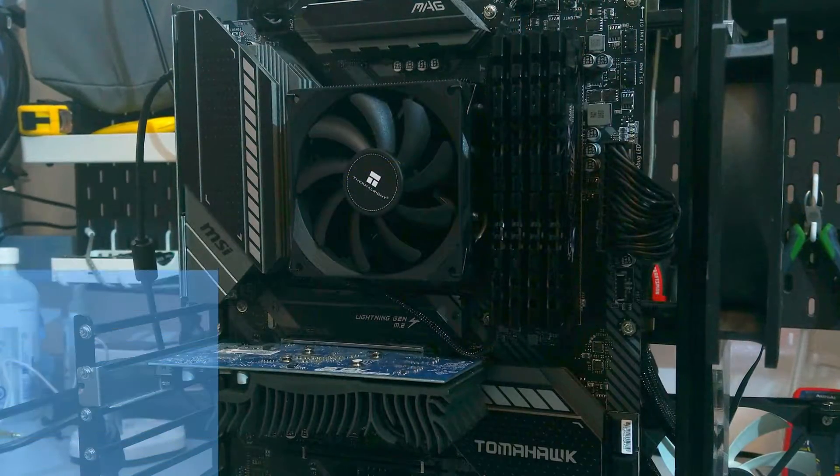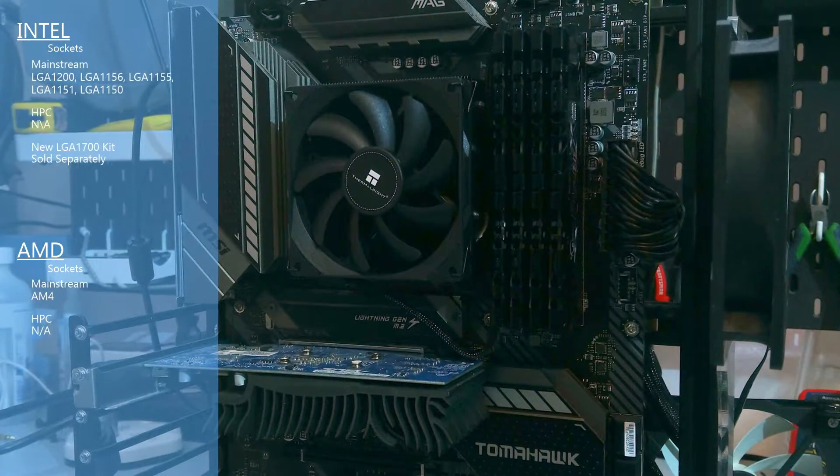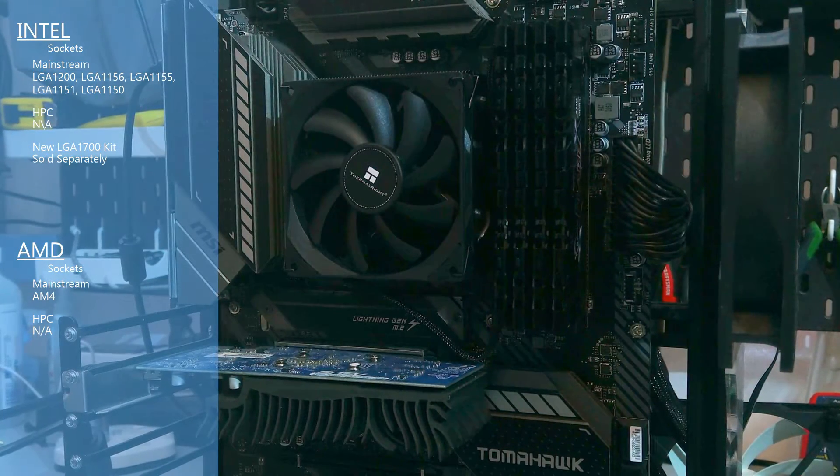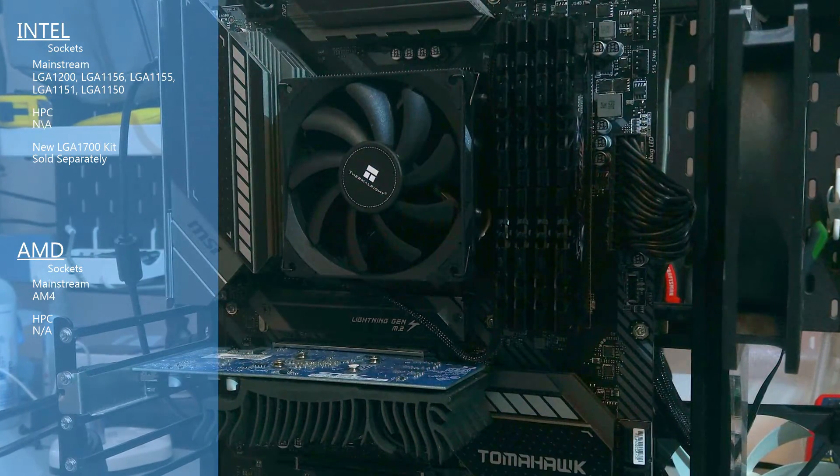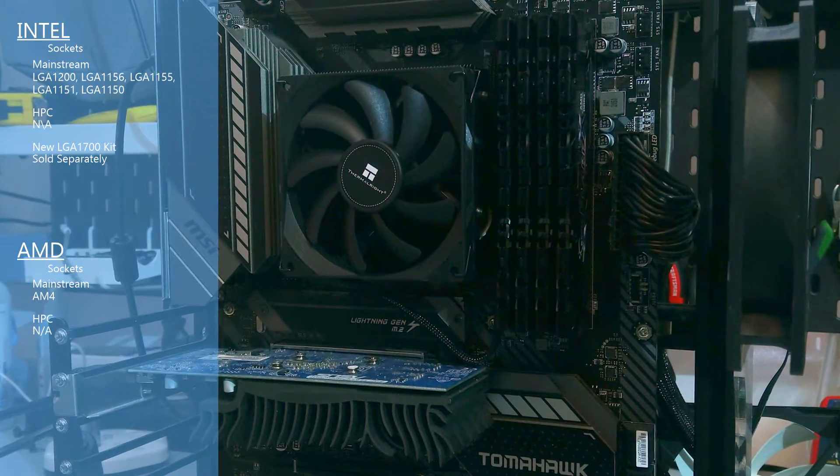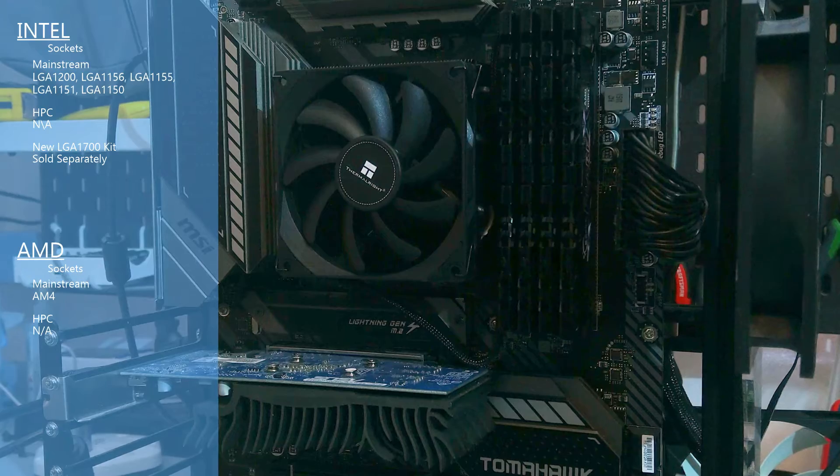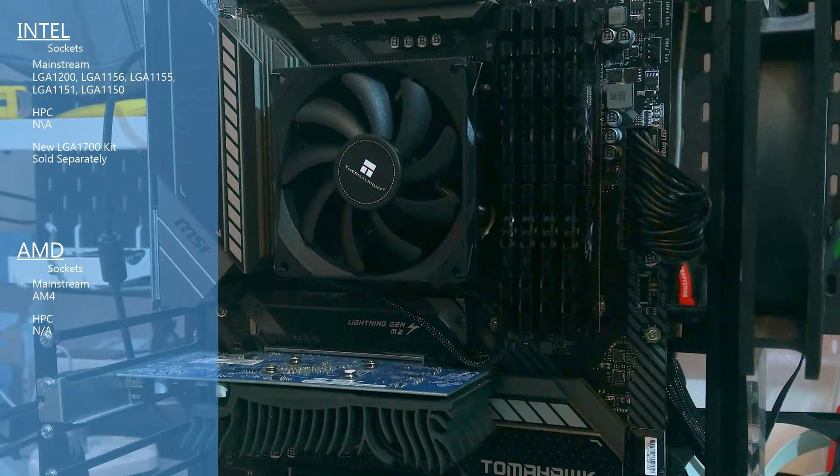Okay, the AXP90 out of the box is compatible with the more current mainstream Intel sockets. There is also a mounting kit for the LGA 1700, but it is sold separately. For AMD compatibility, this cooler is compatible with AM4, which is all you need.